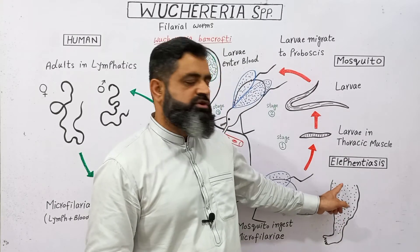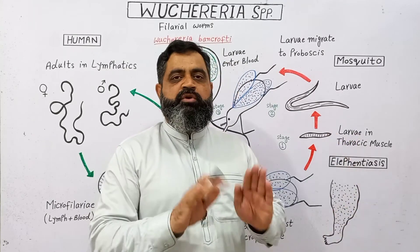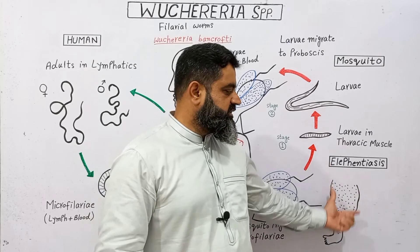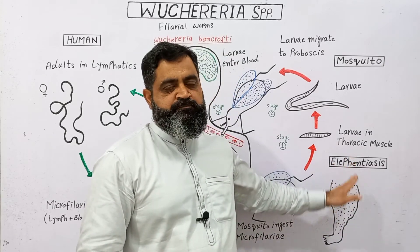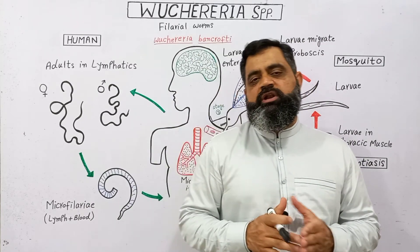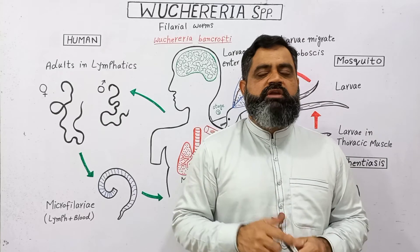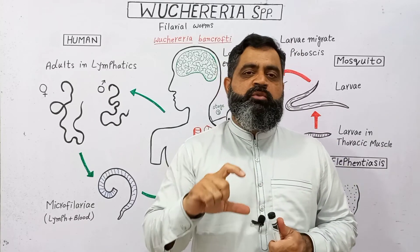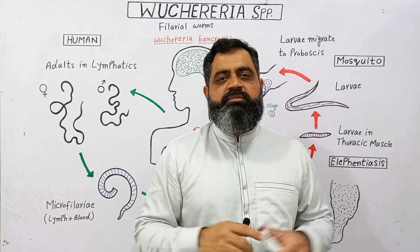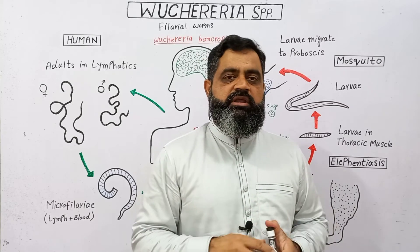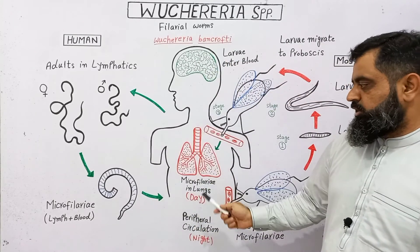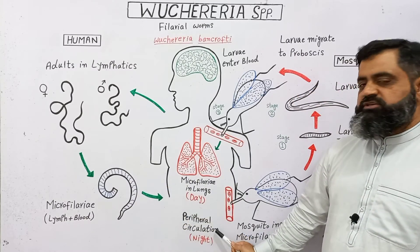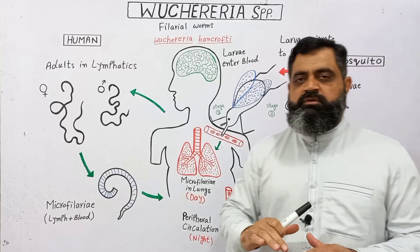What happened with that person was that the interstitial fluid returning from the leg to the blood was blocked by the filarial worms present in the lymphatic ducts. This accumulation of fluid inside the legs causes the condition known as elephantiasis. When the person visited the doctor, the doctor gave him anti-parasitic medicine and advised him not to sleep in open air so that no other mosquito could bite him. But that person ignored the suggestion and slept again in the open air. When he was sleeping during the night time, the microfilariae moved towards the peripheral circulation, which is the circulation on the periphery of the body.